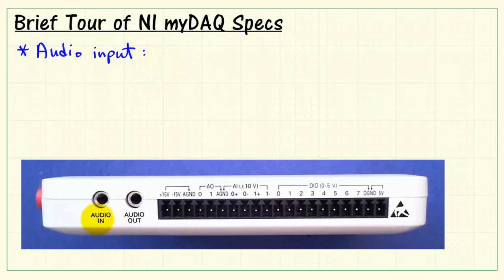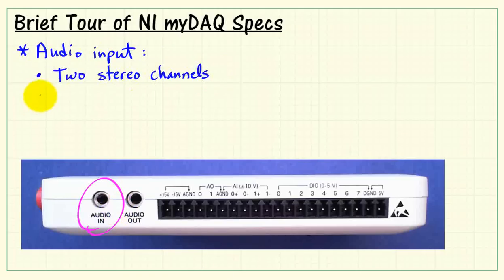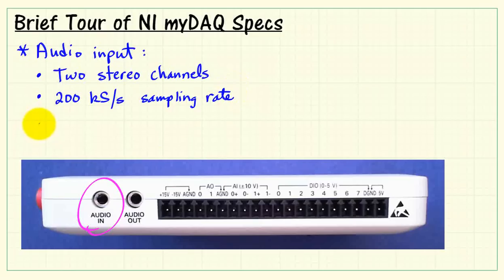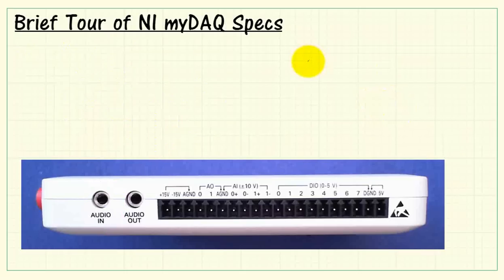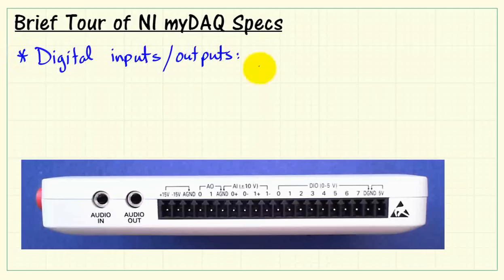Moving on to the audio input, again we have stereo — two stereo channels, left and right — 200 kilo samples per second sampling rate, 16-bit resolution, and again line level, so that's a plus-minus 2 volt range. The audio input is AC coupled, which complements the behavior of the audio output.